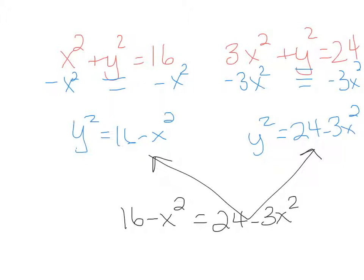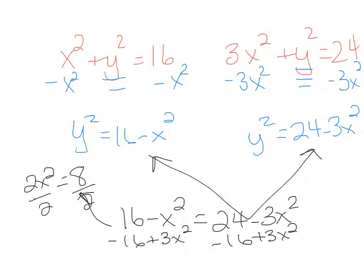And then I just solve. So I'm going to add 3x squared to both sides and subtract 16. And so I get, I'm going to come up here, sorry this is so messy, 2x squared equals 8. Divide by 2. So x squared equals 4. So x equals 2, and I take the square root of both sides.